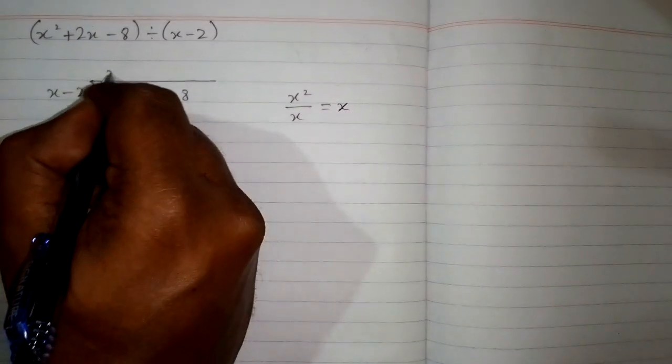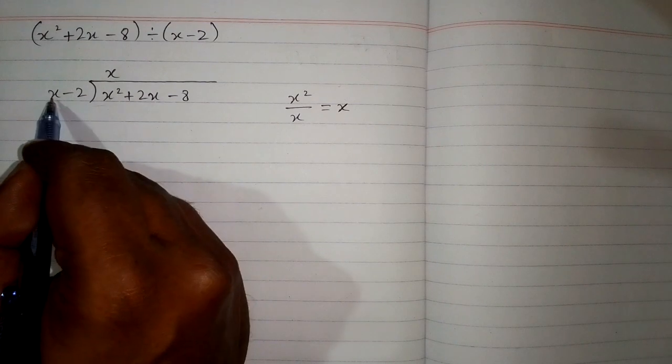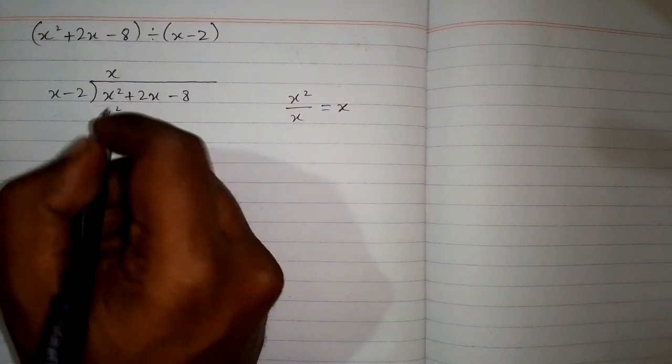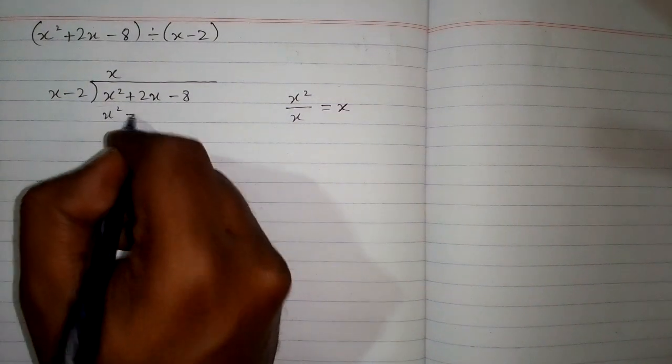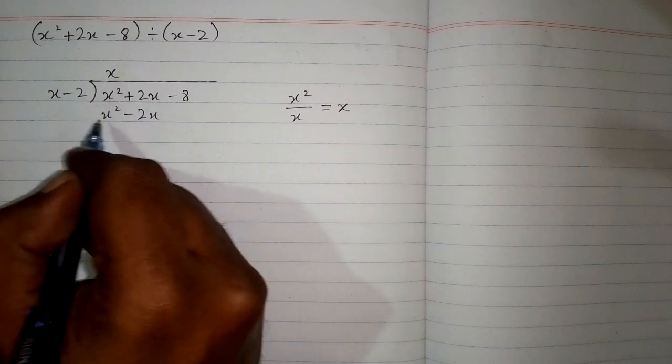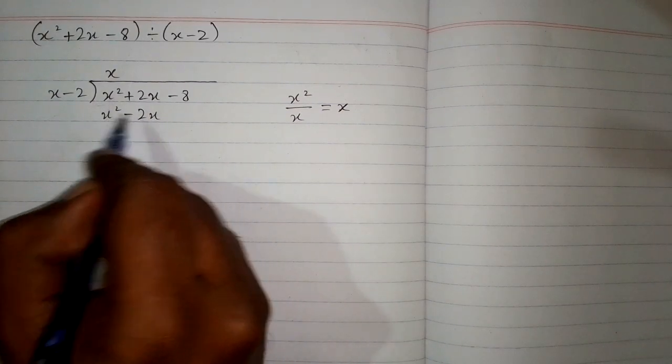Now we will write this x over here and multiply x minus 2 by x. So x times x is x square and x times minus 2 is minus 2x. Now we will subtract this polynomial from this polynomial, so we will change the sign of each term.